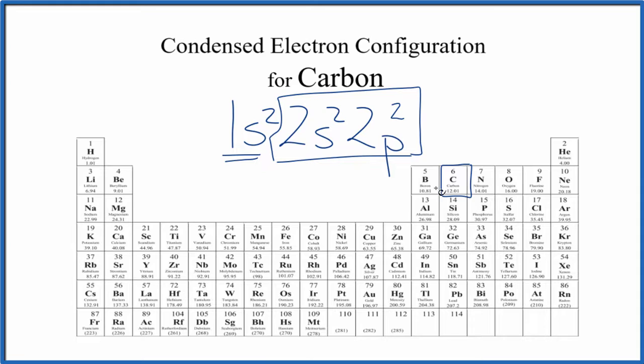So what we want to do is find an element that only has two. That would be helium. And in fact, when we write these electron configurations here, we'll always have the condensed part being one of the noble gases.